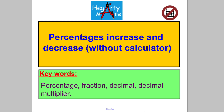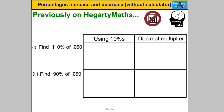Welcome to another video from HegartyMaths. I'm Mr. Hegarty, and in this video we're working out percentage increases or decreases without a calculator. Linking to what we've previously learned on HegartyMaths, we've done things like finding 110% of 60 and finding 90% of 60, using 10% methods and also using decimal multipliers.